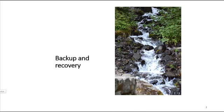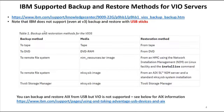One of the first things I want to tell you about is what the supported backup and restore methods are for VIO servers. There is some confusion because you can install a VIO server from the USB flash image that IBM provides. However, you are not able to backup and restore your VIO server to a USB stick. The only supported methods are tape, DVD, remote file system, and Tivoli Storage Manager.